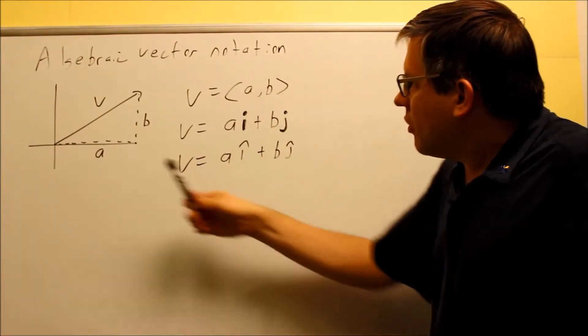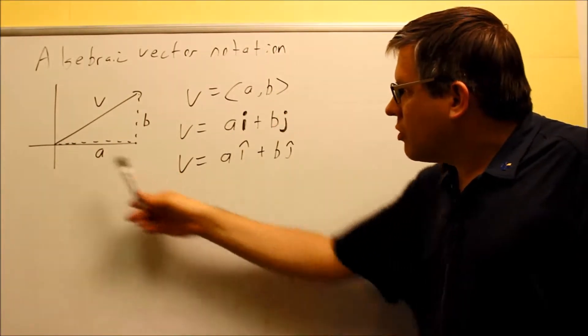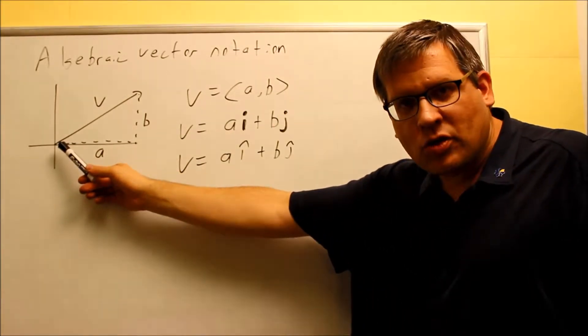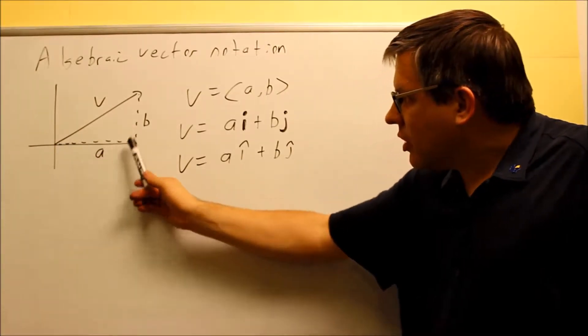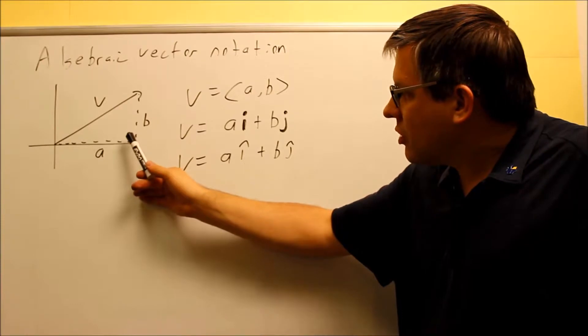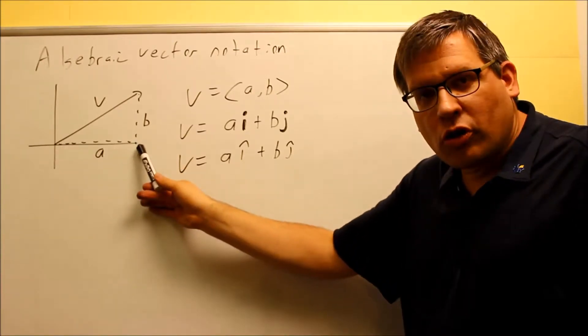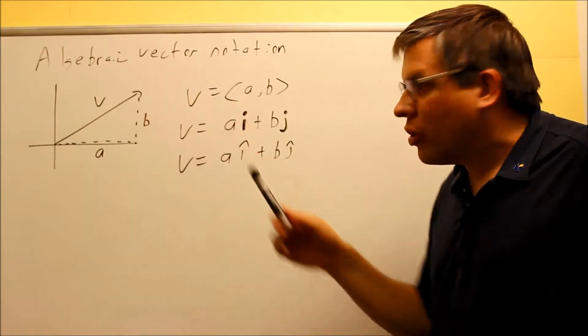So this right here, we're assuming all these are assuming you have what's called a position vector. A position vector is a vector that has its origin at 0,0. So basically, when you have that one at the origin, we have a horizontal component that's A, and you have a vertical component that's B.